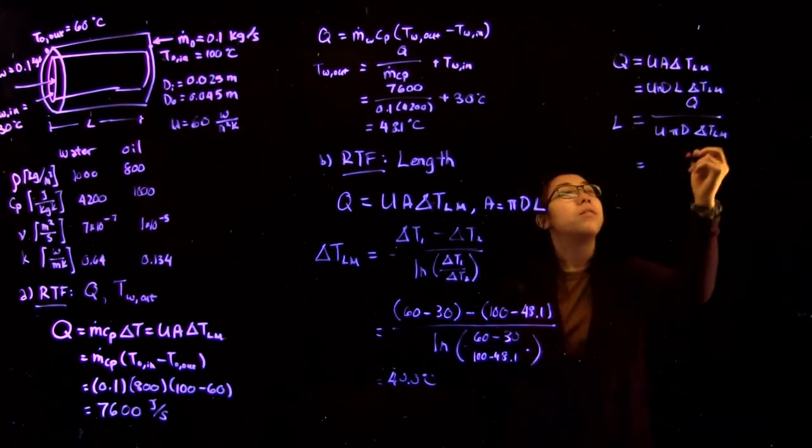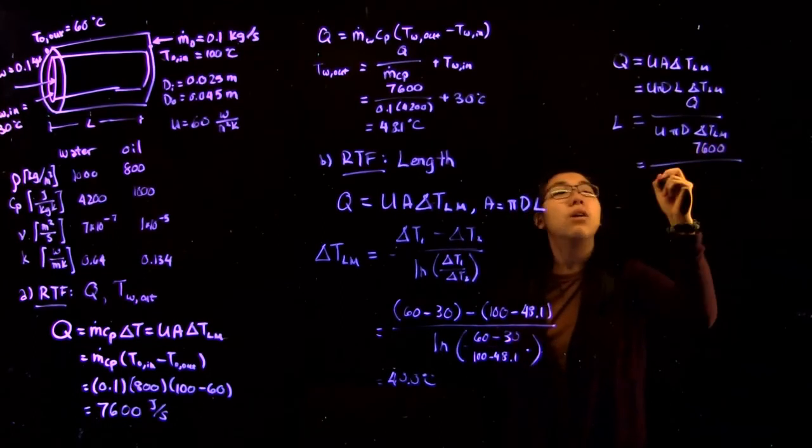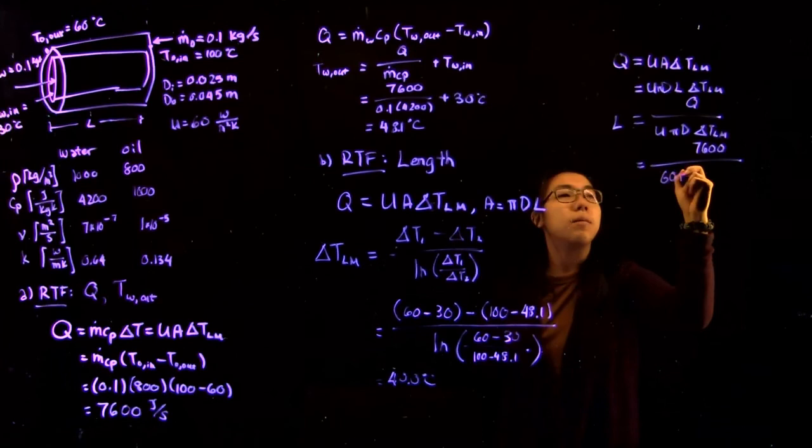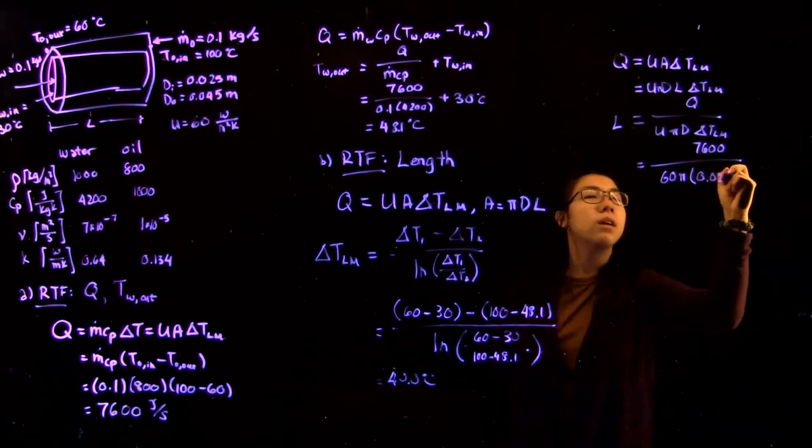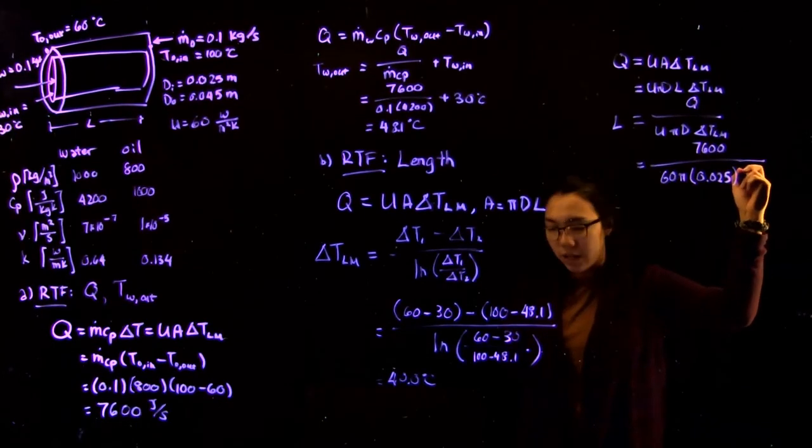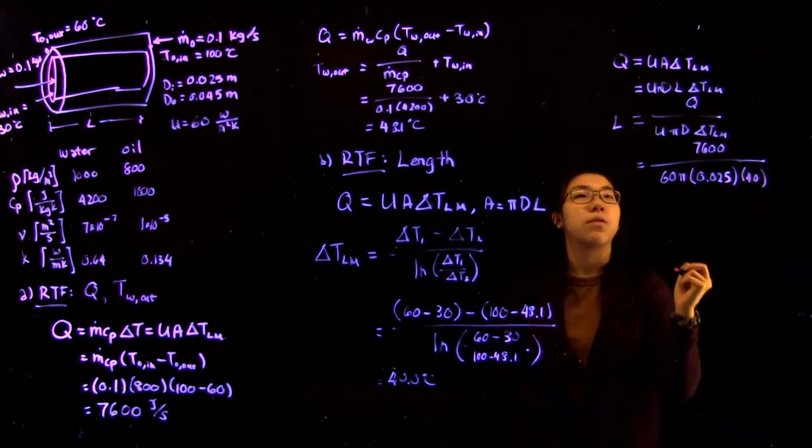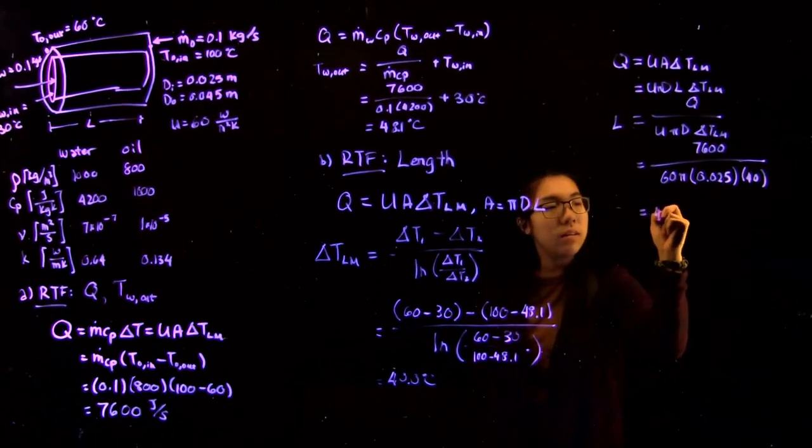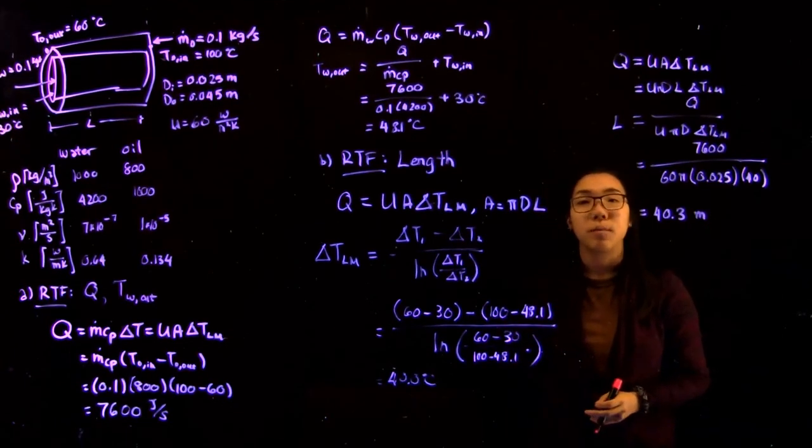And substituting in all our values gives 7600 over 60 times pi times the inner diameter, which is what's important to us, 0.025, times the log mean temperature of 40.3. And this gives us a final exchanger length of 40.3 meters.